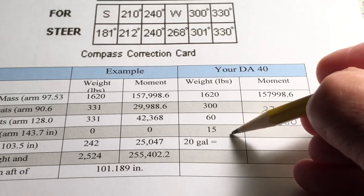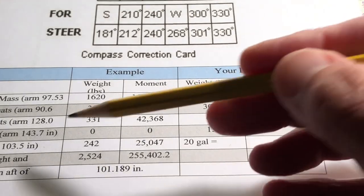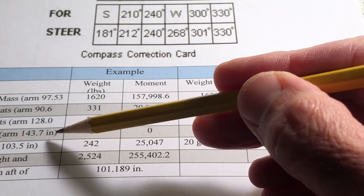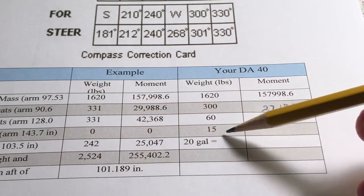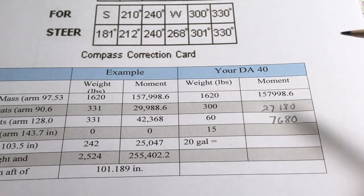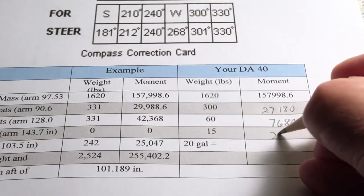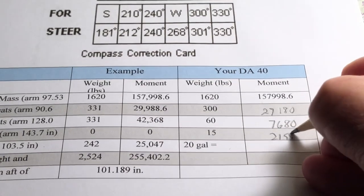We have 15 pounds in the luggage compartment. The arm is 143.7 inches, so 143.7 times 15 is 2,155.5.